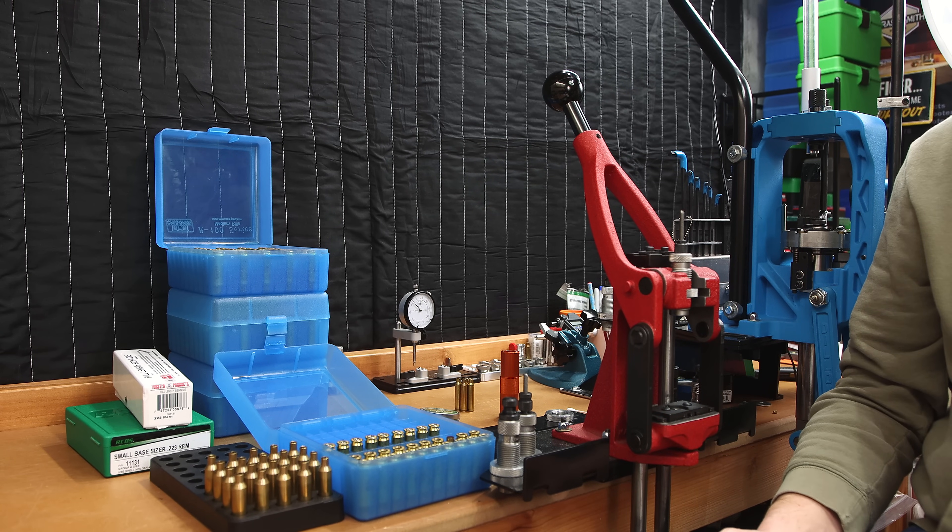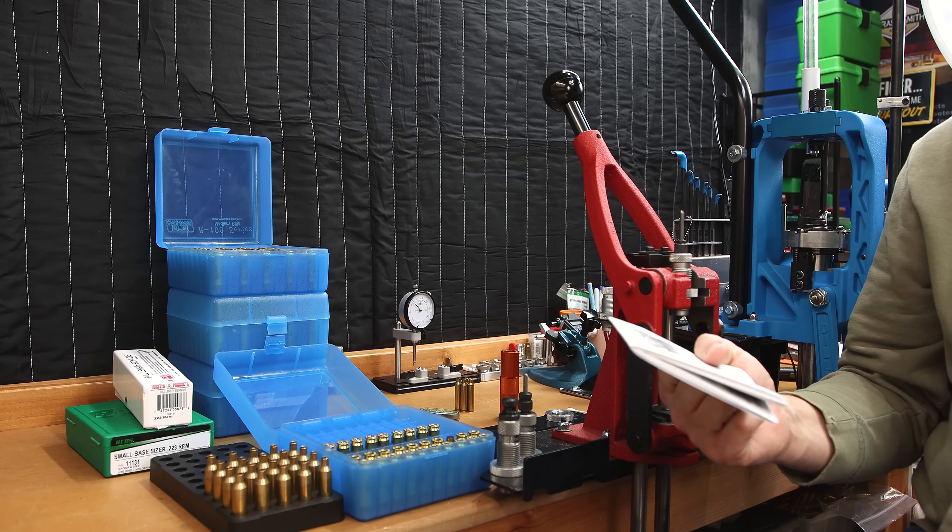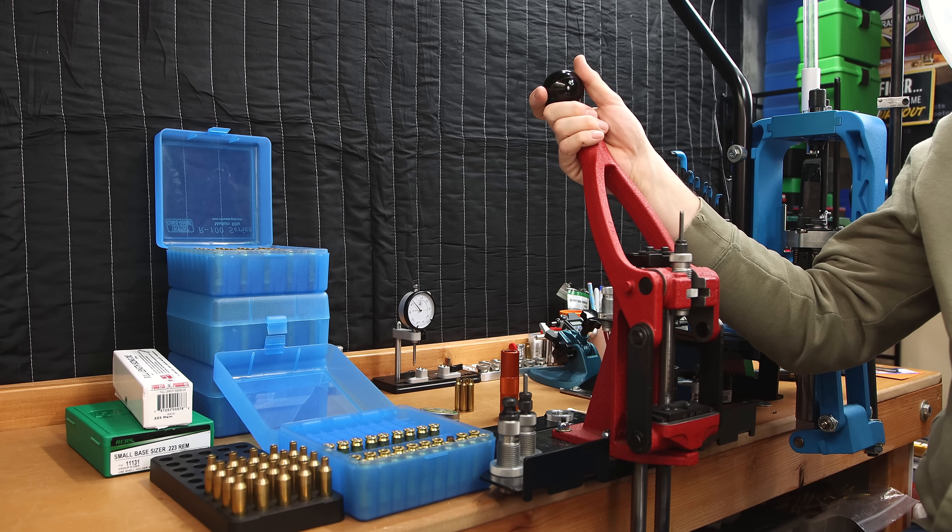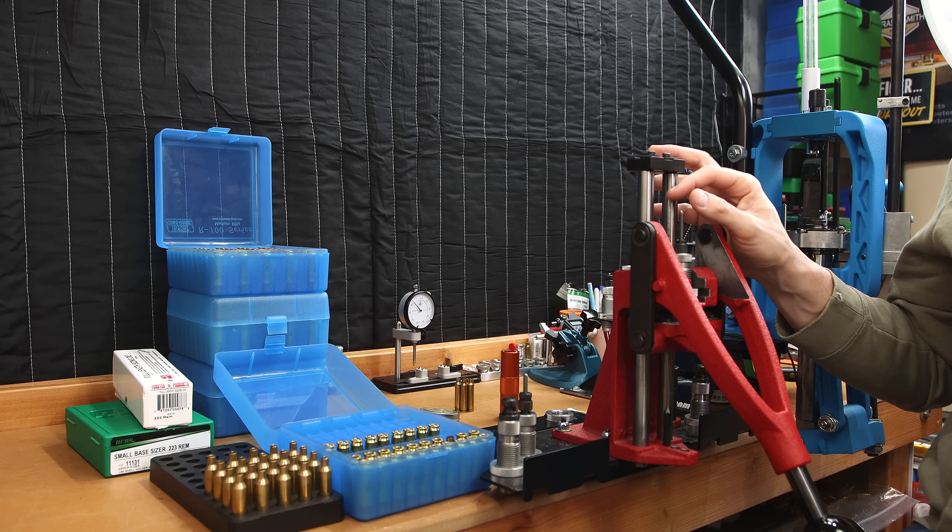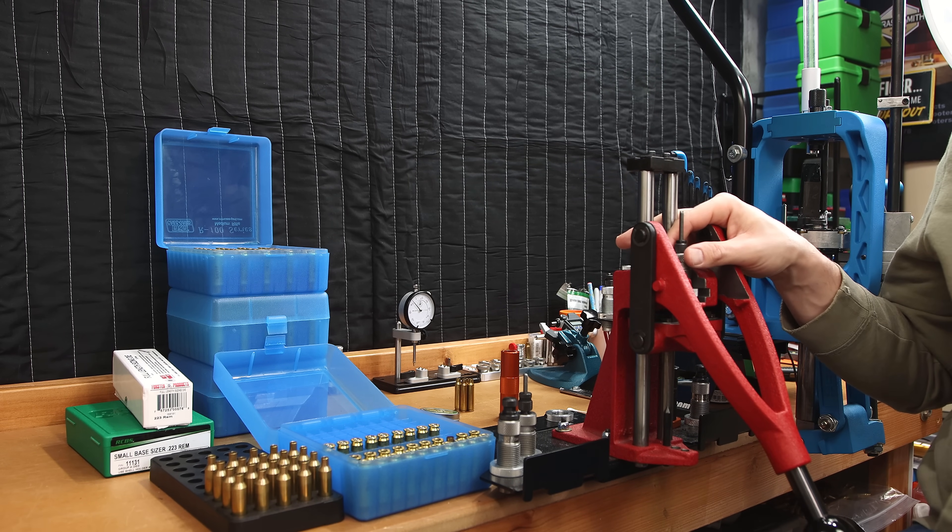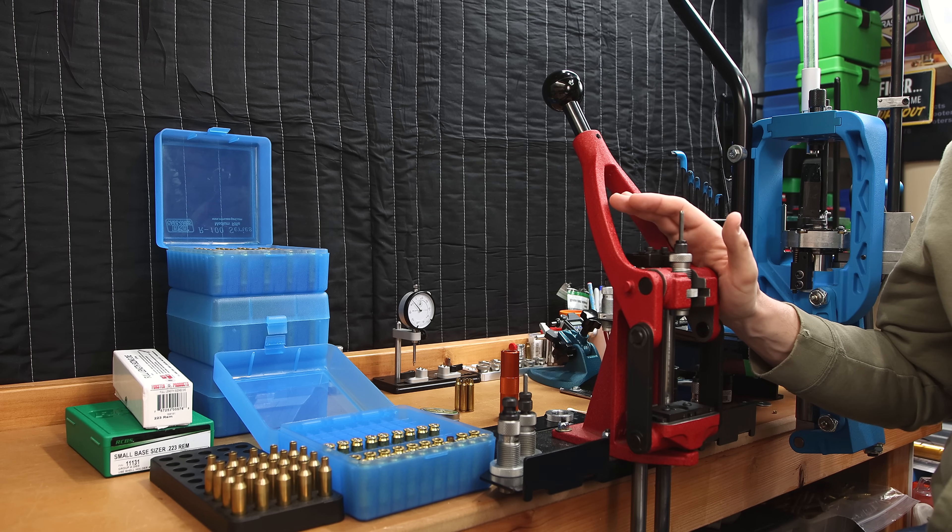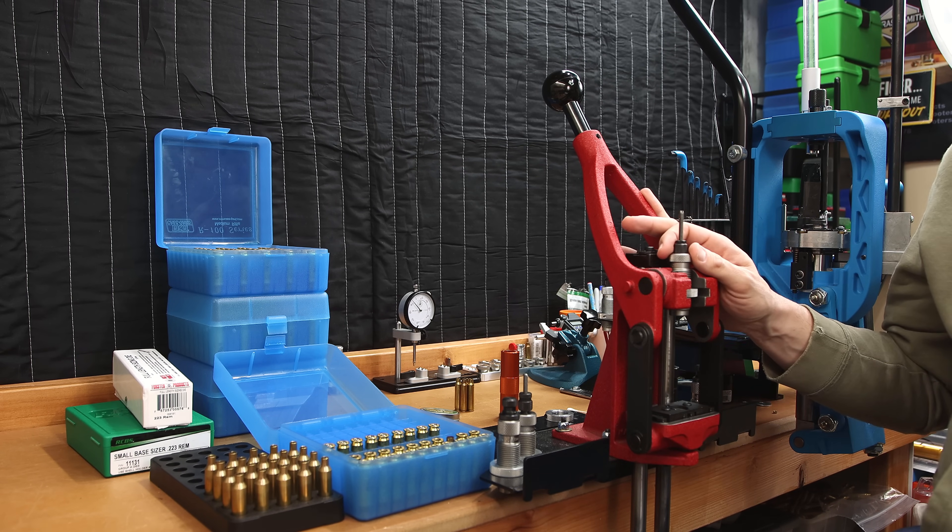Now first off, some sizing dies are going to come with directions, and some don't. Most sizing dies that do come with directions sound something like this: Place your press ram in its uppermost position, the handle all the way down, screw down the sizing die into the press until it touches the top of the shell holder, and then to ensure all the play is removed, add another eighth to one-quarter turn.